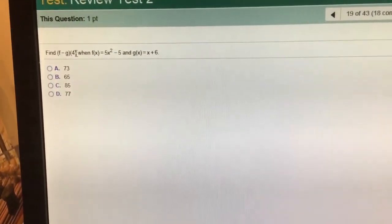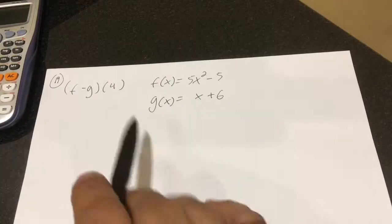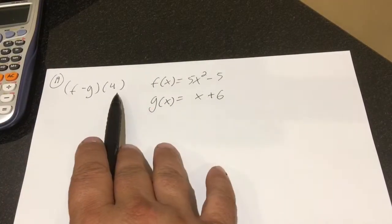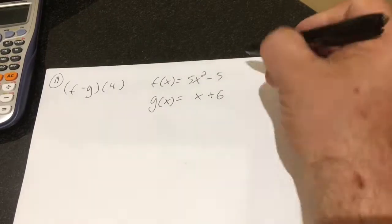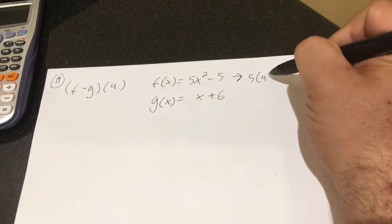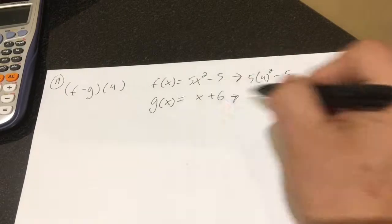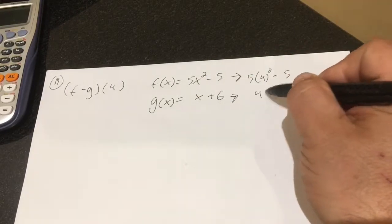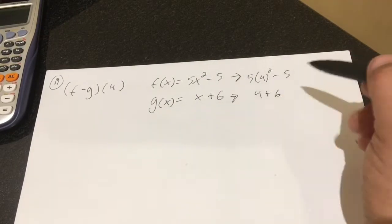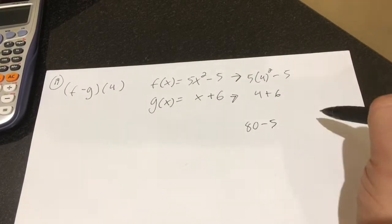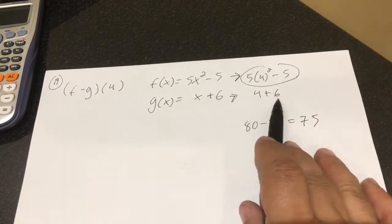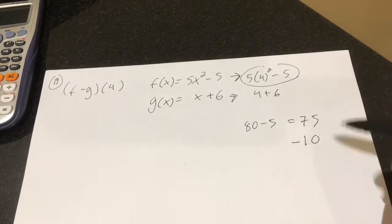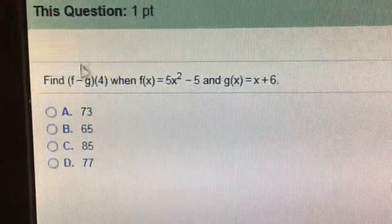I want to plug the 4 into both of them. It wants me to evaluate f minus g of 4. I can subtract these and then throw in the 4, or I can throw in the 4 right now. So if I throw the 4 into f, that's going to be 5 times 4 squared minus 5, which is 80 minus 5, equaling 75. And 4 plus 6 is 10. It's going to be 75 minus 10, which gives me 65. Notice it's choice D.